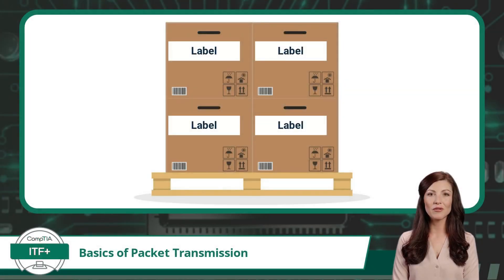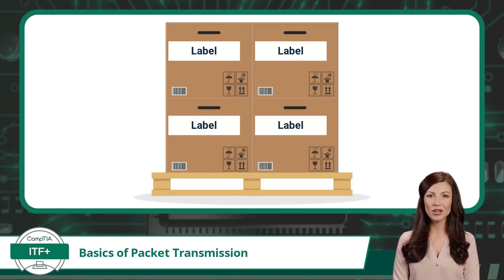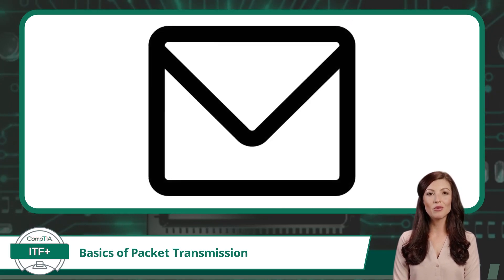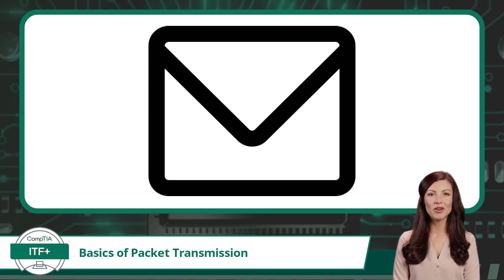Now with our theoretical shipment broken down into many smaller boxes, each box will require a label. The label should include additional information to help with successful delivery. Our data packets will do the same. In addition to the data being sent, each data packet will include information such as addressing, sequencing, error checking, and much more.